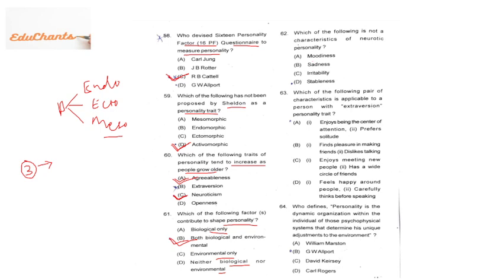Question 62: which is NOT a characteristic of a neurotic personality? Neurotic persons are very fluctuated, irritable, moody, and sad. But stableness is not a characteristic of a neurotic person — they are always fluctuated, so stability does not apply. Question 63: which pair of characteristics is applicable to a person with extraversion? The answer is C — extraverted people love meeting new people and have a wide circle of friends.